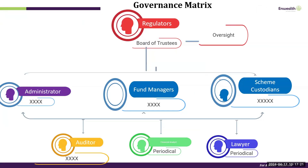The governance model you may consider has funds sitting with the custodian in a nominee account. Nominee assets do not form part of the custodial bank's balance sheet. The benefit of that is that even if the bank collapses, the assets are still safeguarded.